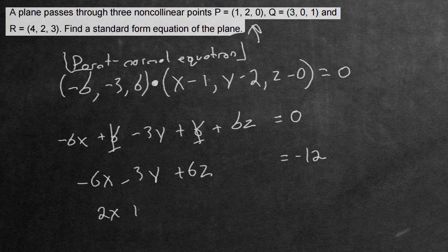2x plus y and negative 2z right here equals positive 4. And this would be the standard form, the standard form of the equation that they're asking us to find.